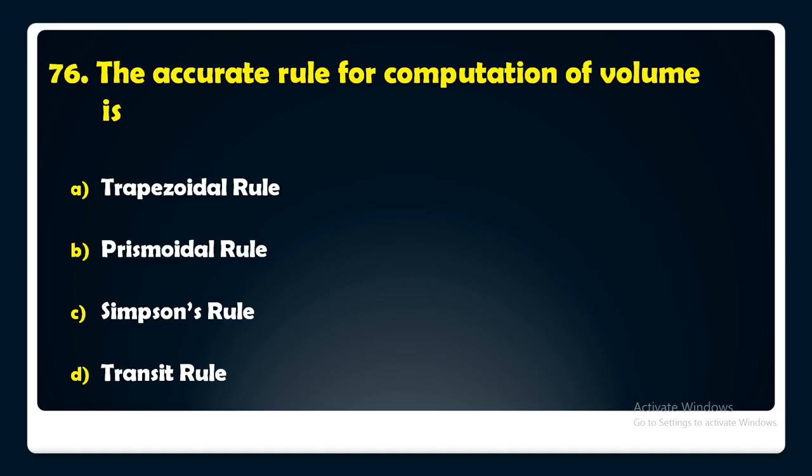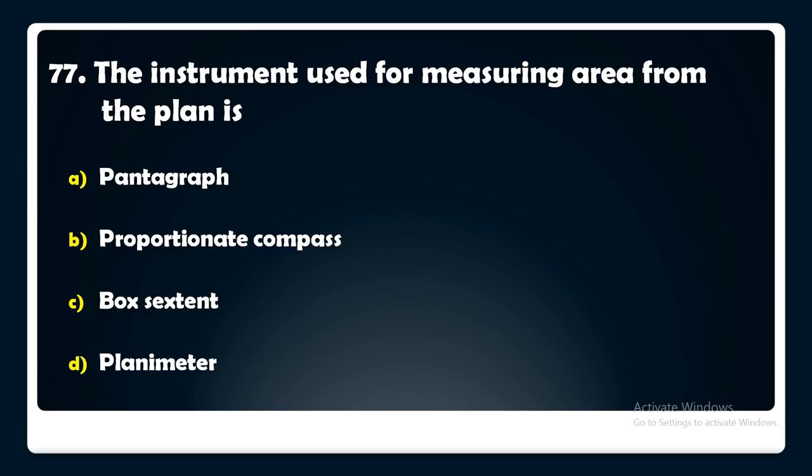The instrument used for measuring area from a plan is — pantograph, proportional compass, box sextant, or planimeter? The answer is: the instrument used for measuring area from a plan is the planimeter.